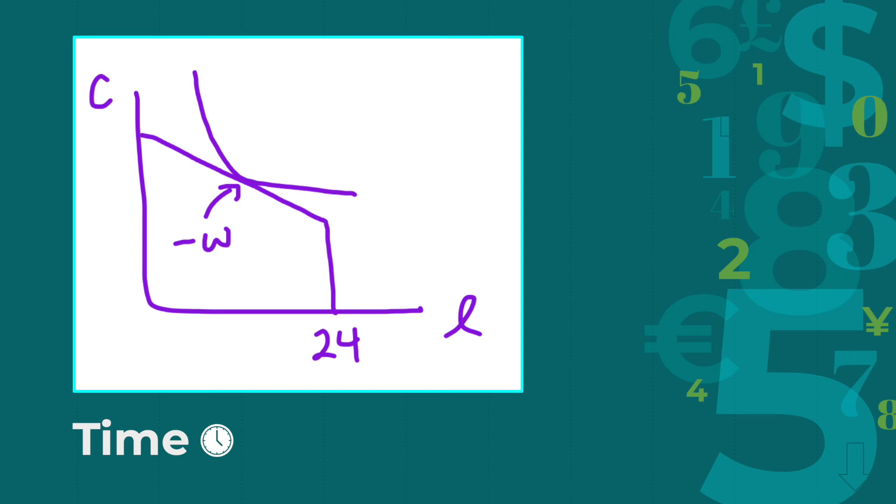So, we can plot leisure versus consumption, where we have a line going straight up, representing the money we have in reserve, such as savings or our parents' money, and a diagonal line representing combos of consumption and leisure that depend on our wage rate. This diagonal line will have a slope of negative W, which is negative wage rate, since every hour we spend working gives us our wage rate and consumption. We can then draw an indifference curve tangent to this line, depending on the amount of consumption and leisure we would prefer based on our wage rate.